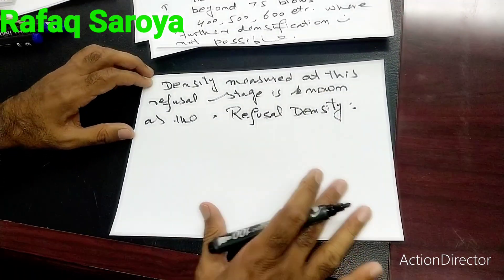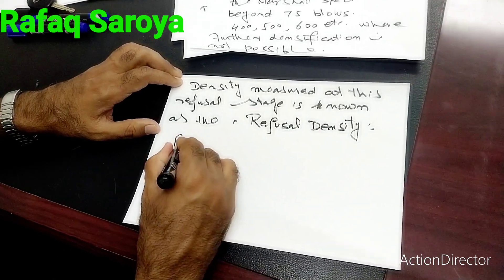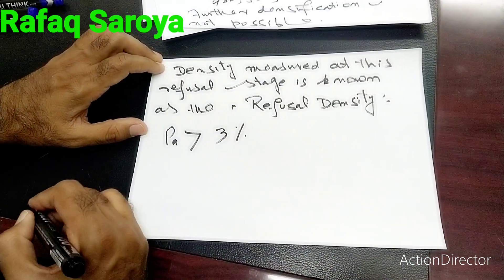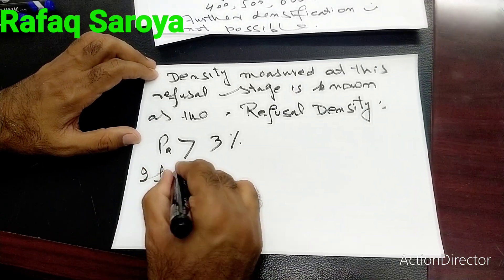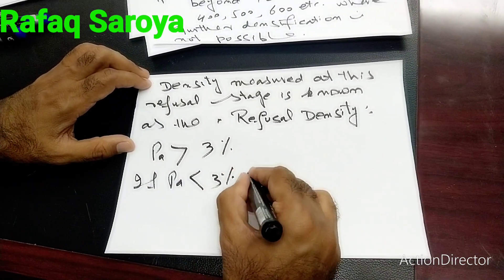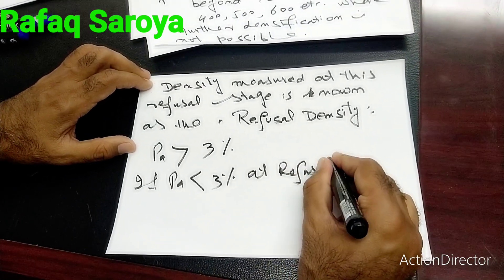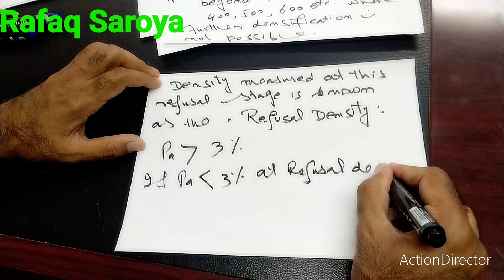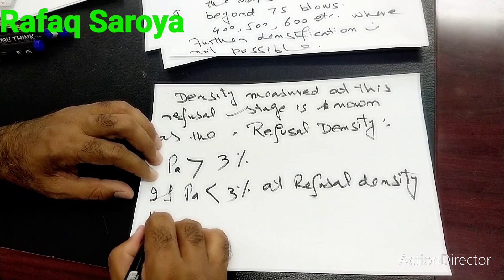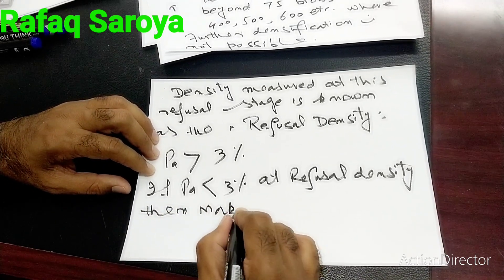With this refusal density, we have to make sure our air voids at this density should always be greater than 3%. If air voids fall below 3% at refusal density, then we make a new design.